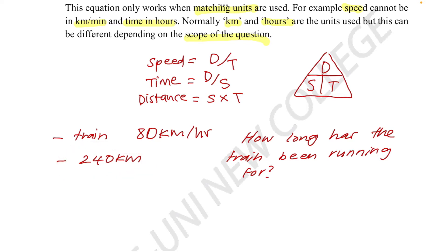So to solve this, all we need to do is replace the distance with the value 240 kilometers and then we put it over speed, which is 80 kilometers per hour. And then we do a simple fraction. We know 8 divided by 24 is 3, so we get 3. So now we can answer how long has the train been running for. It has been running for 3 hours. And it's that simple.